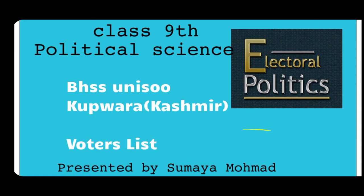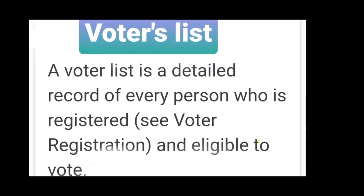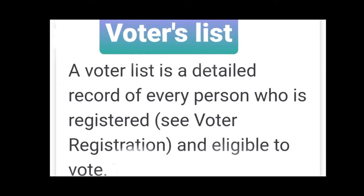A voter list is a detailed record of every person who is registered and eligible to vote. Before the election, those who are eligible for the right to vote are prepared in this list. This list is officially called the Electoral Roll, and commonly we call it the Voters List.